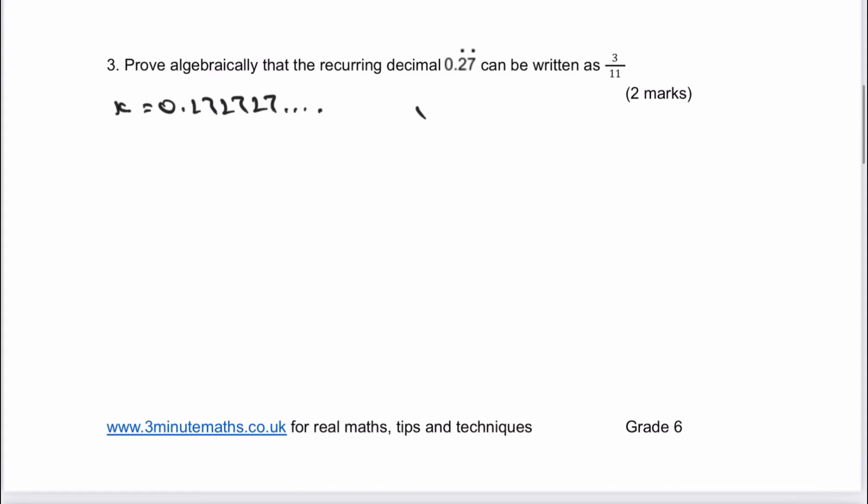So therefore, I can move the decimal point by two places, and I get 100x equals 27.2727 dot dot dot, and so on.